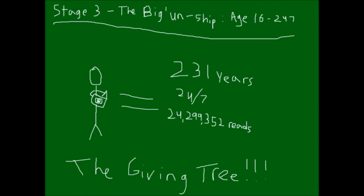The Biggin stage is where the paths diverge. This stage lasts from age 16 to age 247 and consists of only one thing: reading the copy of The Giving Tree that they were birthed with. Every single one of those 231 years, the only thing that they will be preoccupied with is reading that book.